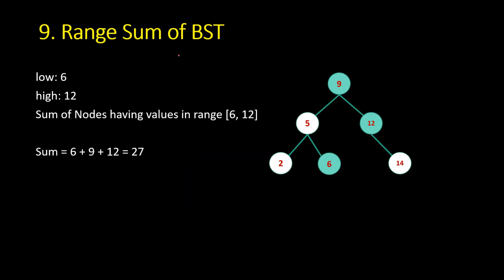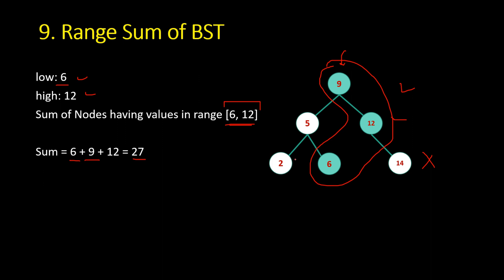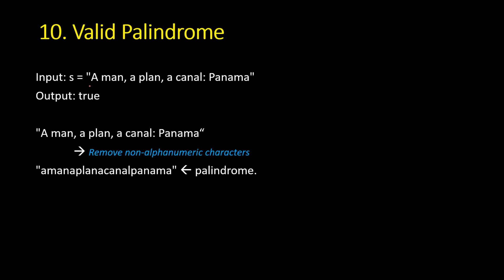The ninth problem is Range Sum of BST. Given a binary search tree and an inclusive range [low, high], traverse the tree and sum all node values that fall within the range. For example, with range [6, 12], nodes with values 9, 6, and 12 are included, giving a sum of 27. Any traversal method works and it runs in linear time.